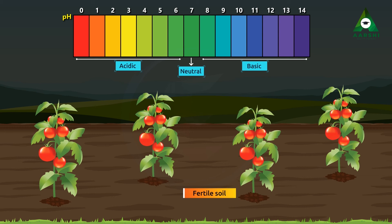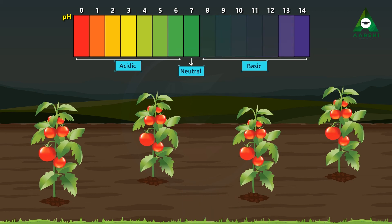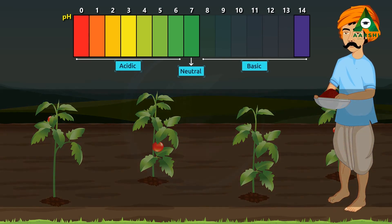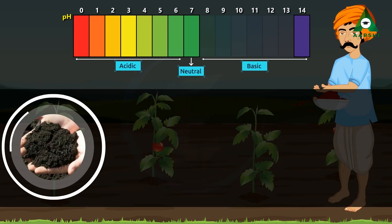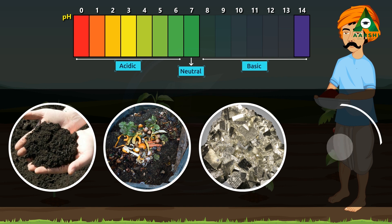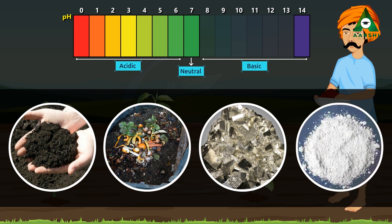Similarly, often the pH value of soil becomes greater than 7, i.e. becomes basic. In such conditions, the soil is treated with neutral manure or compost, or pyrite or gypsum, which neutralize the basic nature of the soil.